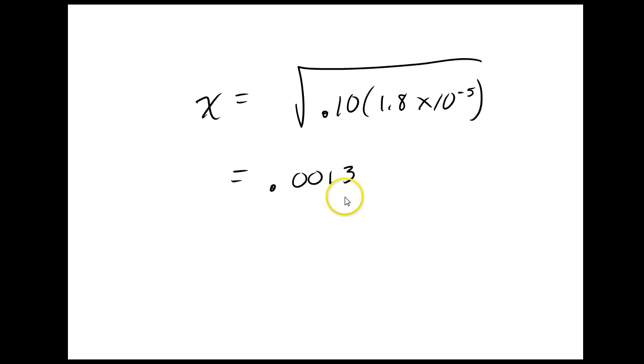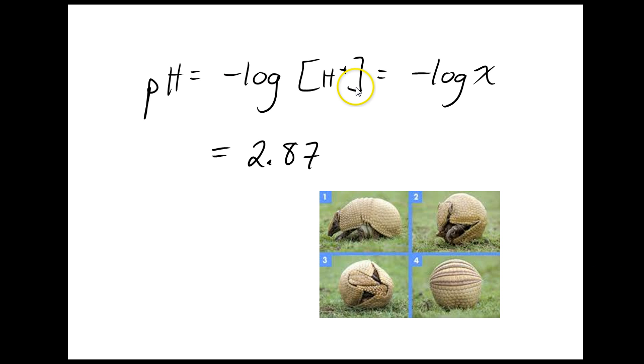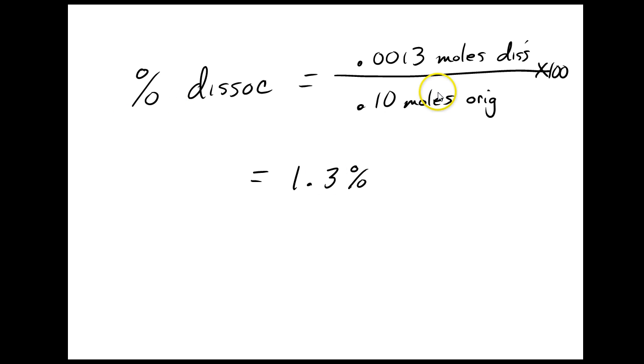Then I solve for X. At this point, you want to go back to your icebox and make sure you know what X is. Luckily, in our problem, X is just equal to the H+ concentration. So when we want to find the pH, it's just going to be negative log of X, which is 2.87. I had two sig figs, so now I have two decimal places. The percent dissociation is just going to be that final H+ concentration divided by my original acid concentration times 100, and it will give me 1.3%. Easy peasy.